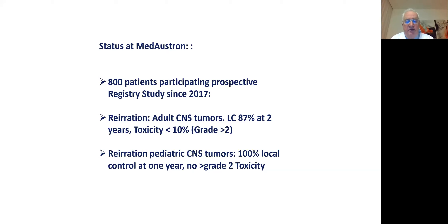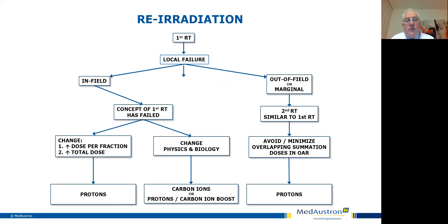That is a very acceptable number considering you are talking about high accumulated doses. We also looked at re-irradiation of pediatric CNS tumors in our first 15 patients — we have 100% local control and no high-grade toxicities, though we are obviously observing carefully. You need a very clear algorithm for how to deal with re-irradiation; you cannot do this just on an individual basis. You need a roadmap and an algorithm for how you want to proceed.